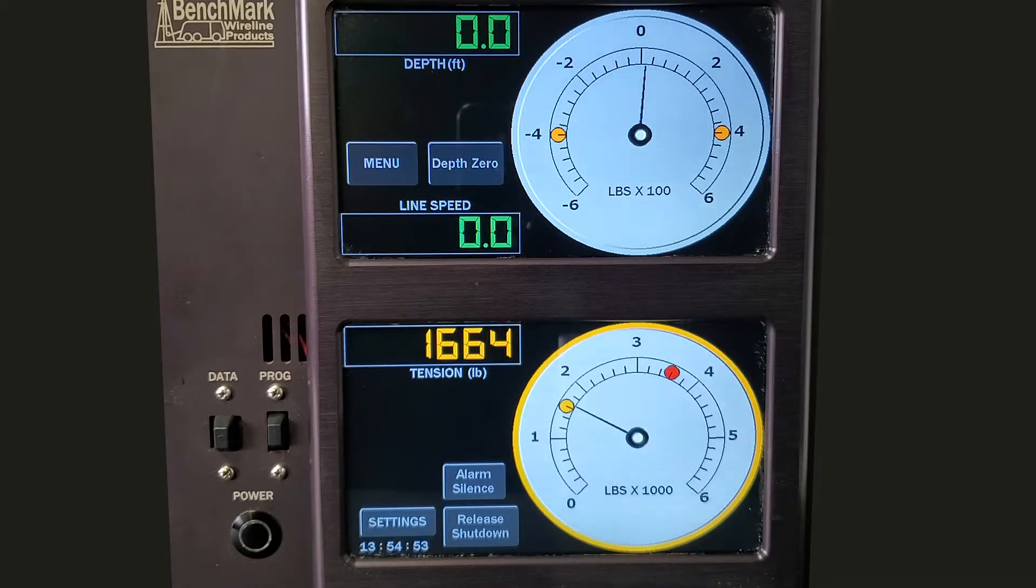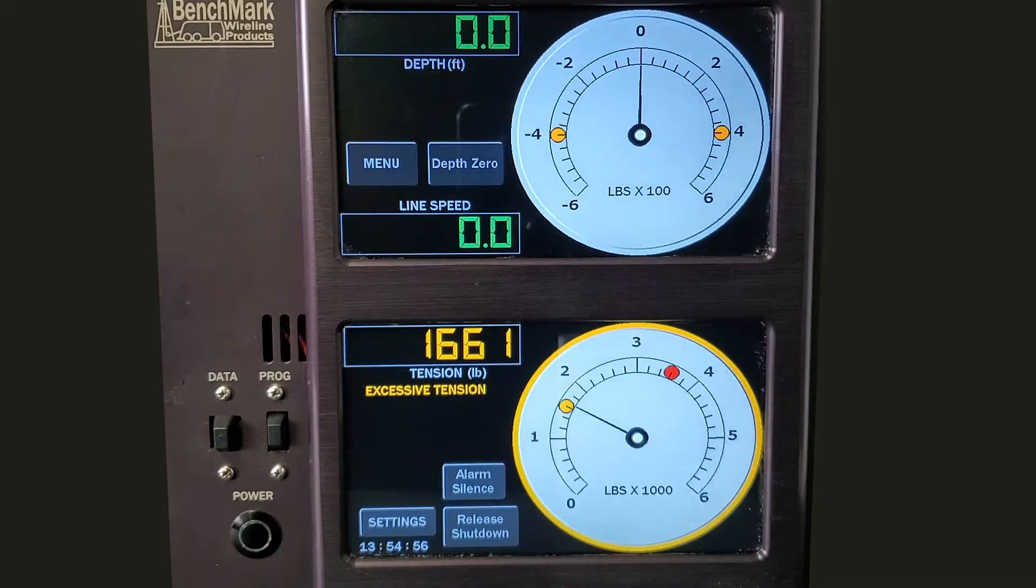At that point, press the Alarm Silence button to turn off the audible alarm. In this scenario, the tension alarm will not disengage the joystick.